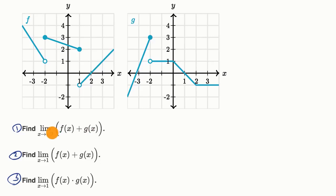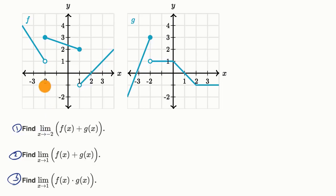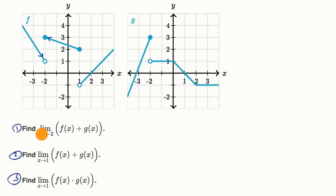For the first one, you might try to find the limit as x approaches negative two of f of x, and then the limit as x approaches negative two of g of x, and then add those two limits together. But you will quickly find a problem. When you find the limit as x approaches negative two of f of x, as we approach from the left it looks like we're approaching one, and from the right it looks like we're approaching three.